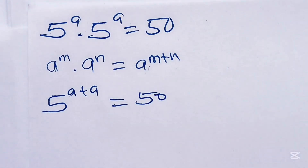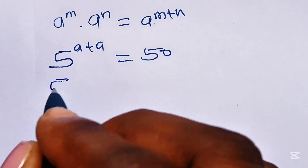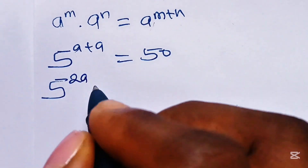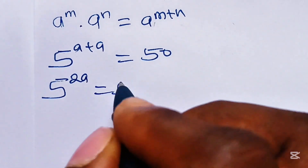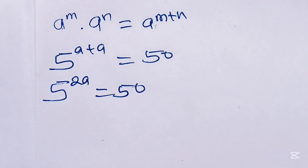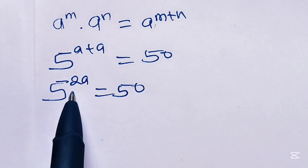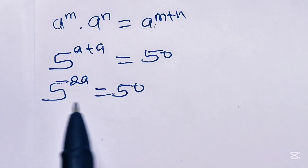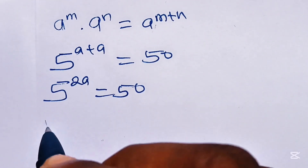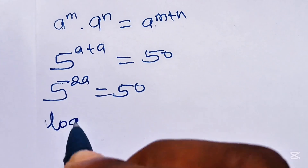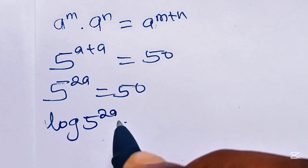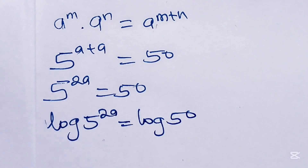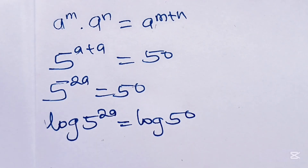We have 5 to the power of a plus a, which gives us 2a, equal to 50 — so 5 to the power of 2a is equal to 50. Now because the a we are looking for is actually the power, we need to introduce log to both sides of this equation.